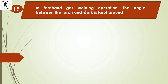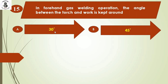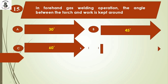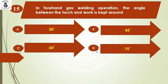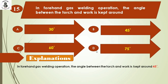In forehand gas welding operations, the angle between the torch and work is kept around: Option A: 30 degrees. Option B: 45 degrees. Option C: 60 degrees. Option D: 75 degrees. For forehand welding operations, the angle between the torch and work is around 45 degrees, which gives a sound weld and is more comfortable for performing the welding process. So the answer is option B.